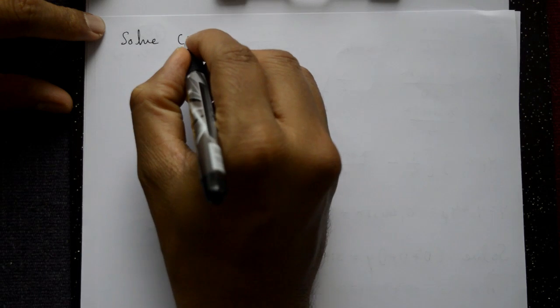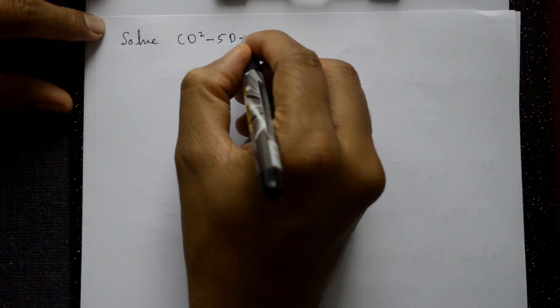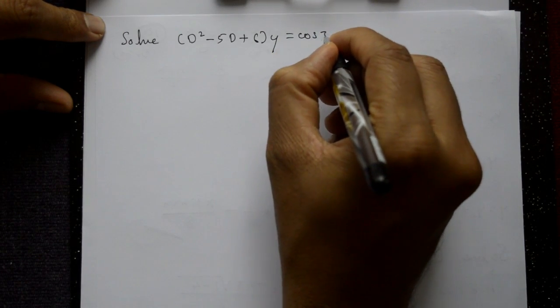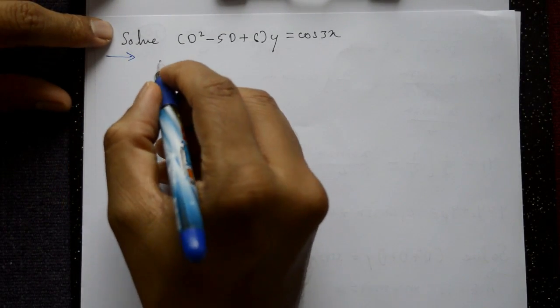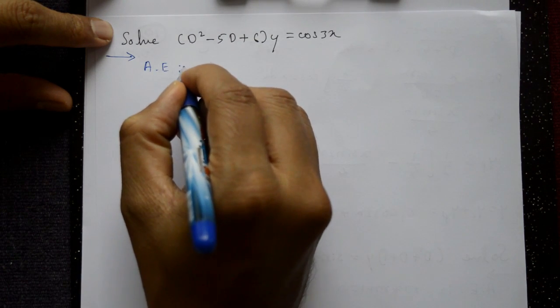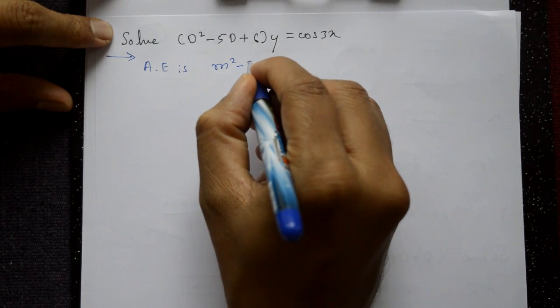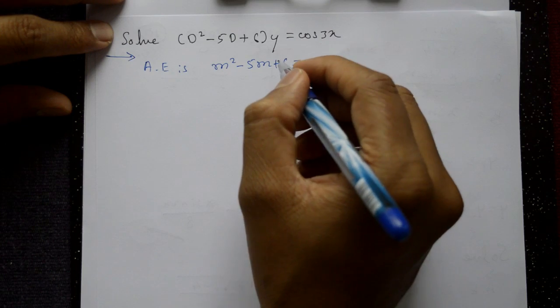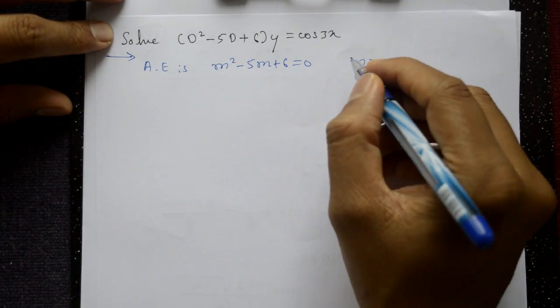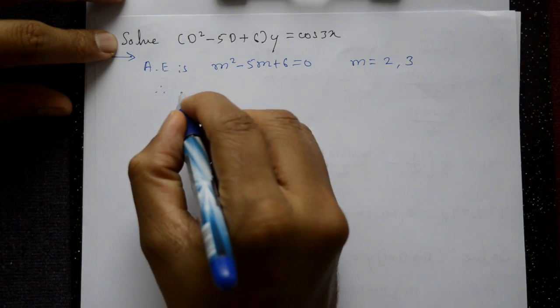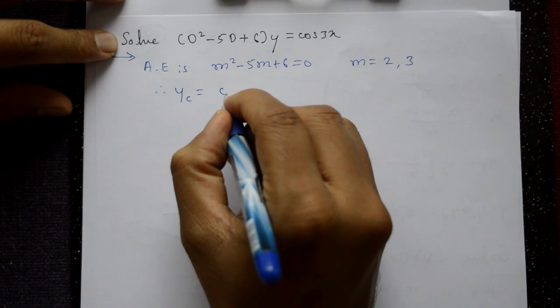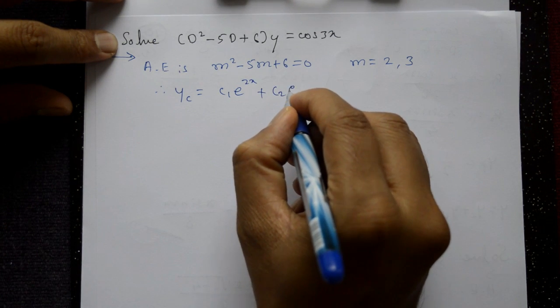Next example: Solve (D² − 5D + 6)y = cos3x. The auxiliary equation is m² − 5m + 6 = 0. By factorization, the roots are m = 2 and m = 3. Therefore, the complementary function is yc = c₁e^(2x) + c₂e^(3x).